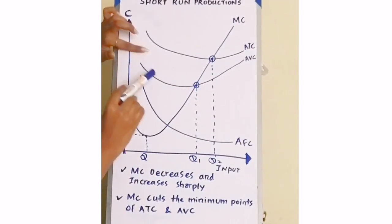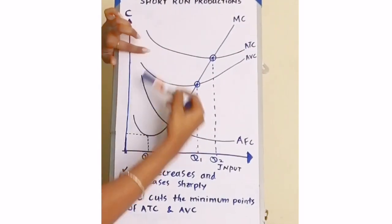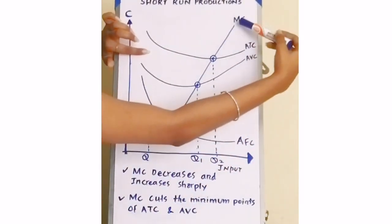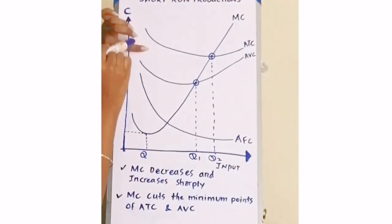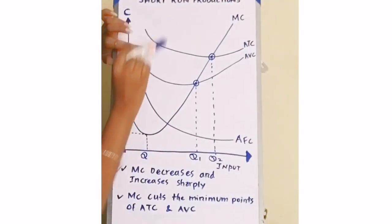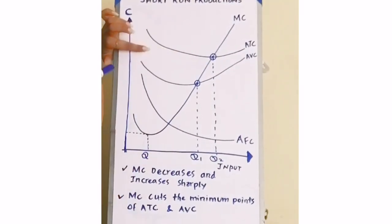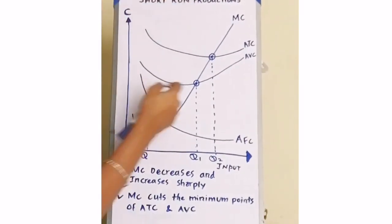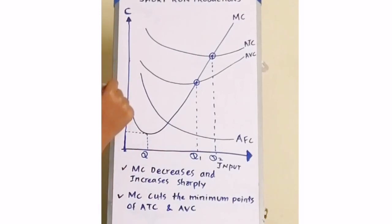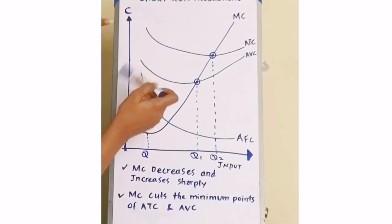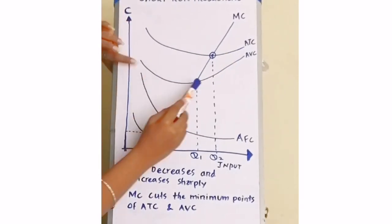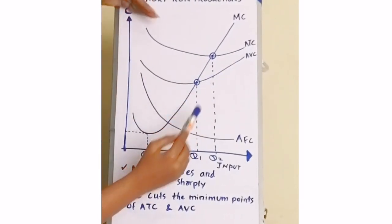Thereafter, the MC curve increases sharply by crossing the minimum points of ATC and AVC. If you observe ATC and AVC, ATC is positioned higher than AVC because ATC equals AVC plus AFC. Therefore, ATC is above and AVC is below.